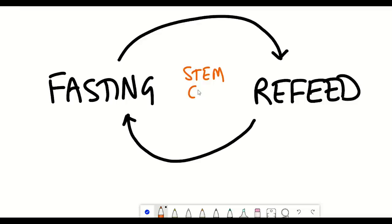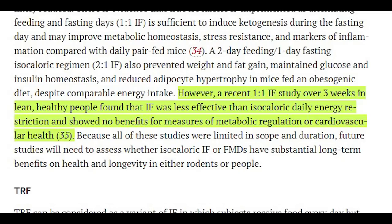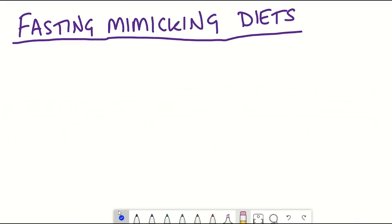However, a recent study showed that alternate day fasting over three weeks in healthy people was less effective than having an isocaloric daily energy restriction, and it showed no benefits for measures of metabolic regulation or cardiovascular health. However, most of these studies in humans are really lacking long-term analyses at the moment.